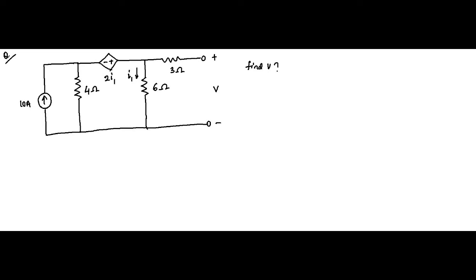Hello friends, here we are with another question on KVL and KCL application to circuits involving dependent sources. We have this circuit and we have been asked to find the voltage across these two open-circuited terminals. Here we have a dependent source which is a current dependent voltage source, dependent on the current flowing through the 6 ohm resistor.